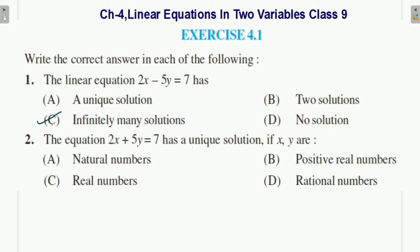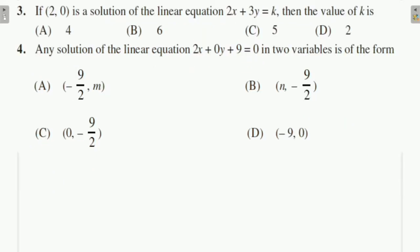The equation has a unique solution if x and y are natural numbers. Since natural numbers have no end, the equation has infinitely many solutions in general. But if x and y are natural numbers, then there will be one unique solution. So: the equation has a unique solution if x, y are natural numbers — note this carefully.